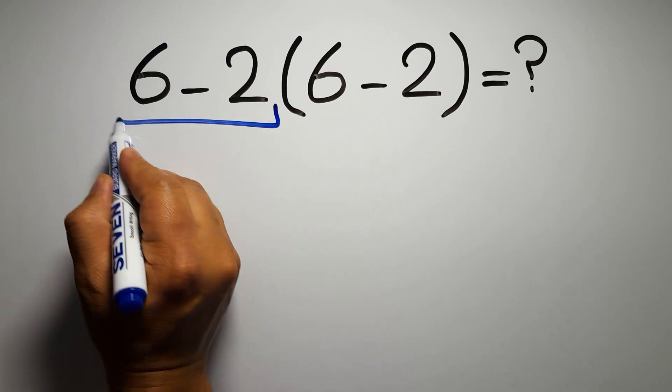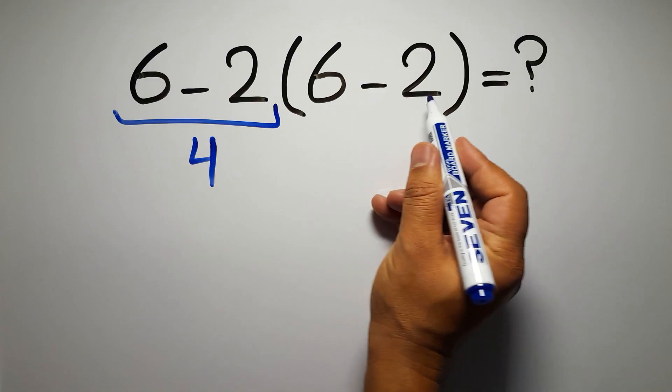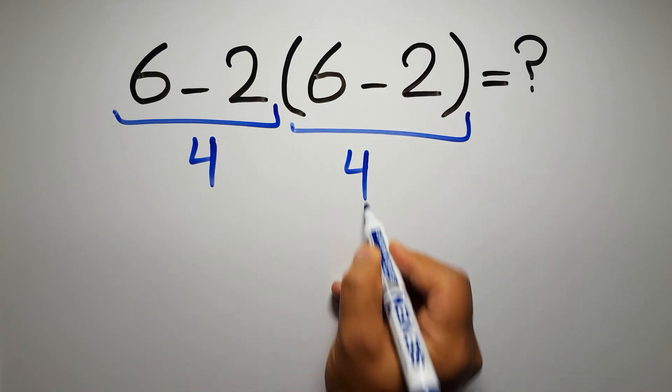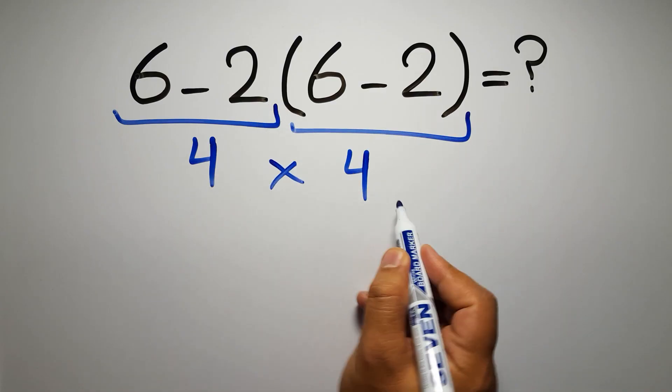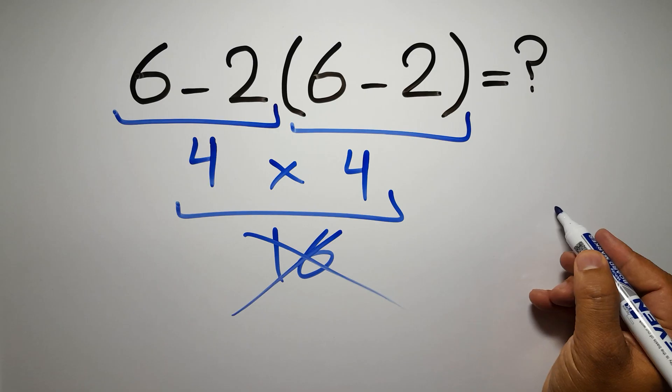6 minus 2 gives us 4, and again here inside these parentheses we have 6 minus 2, so 4 times 4 which equals 16. But this answer is not correct because according to the order of operations, first we have to do parentheses.